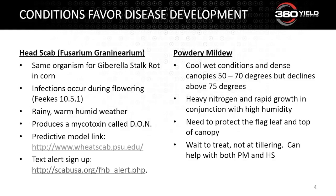Powdery mildew is similar in that it likes these wet conditions, although the difference is powdery mildew tends to favor cooler temperatures — like that 50 to 70 degree range. There can be overlap in that 70 to 75 degree range for development of both diseases. Powdery mildew tends to develop where you have real growthy wheat — you've applied a lot of nitrogen, you've got real dense stands, and don't have a lot of wind movement.